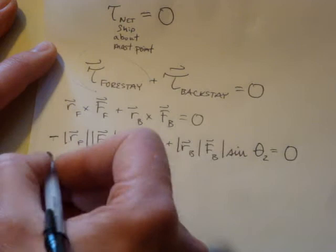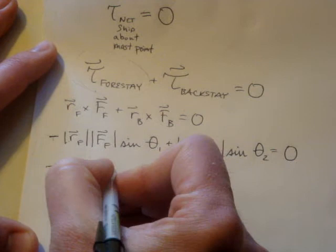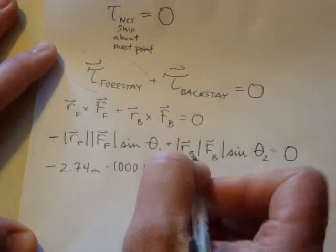Then we can plug in some of the numbers here just so you can see how that works. It's 2.74 meters, the force of the backstay is 1,000 newtons times sine of the angle between them.